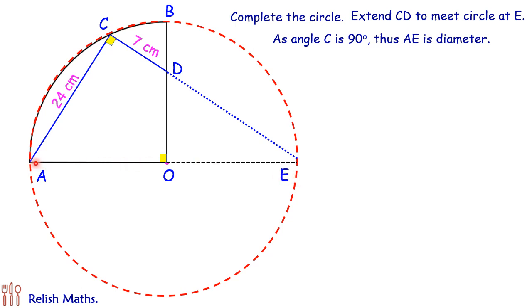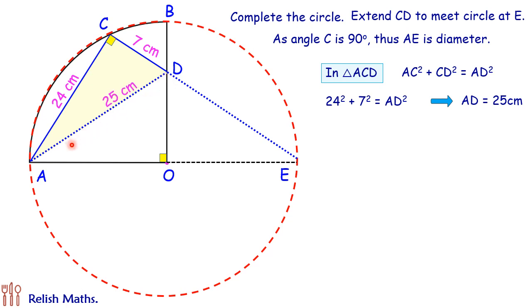Let's join AD. If we look at this right triangle, that's triangle ACD, we apply the Pythagoras theorem. So AC² + CD² = AD². Putting these values and solving, we get the value of AD as 25 centimeters.